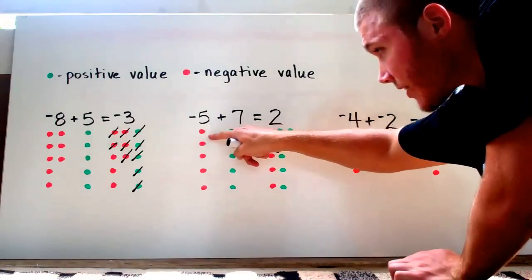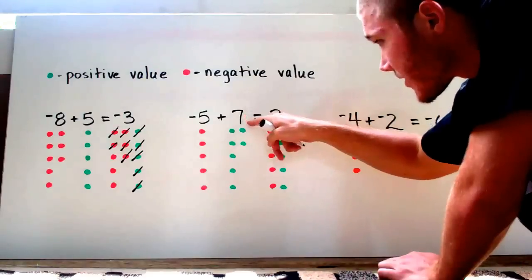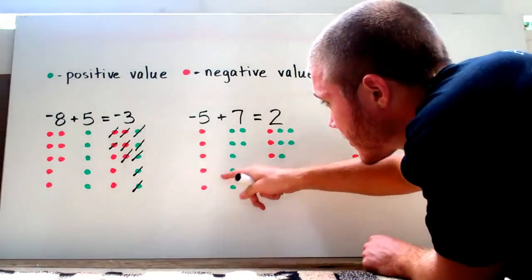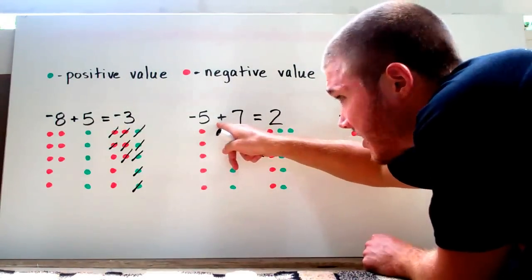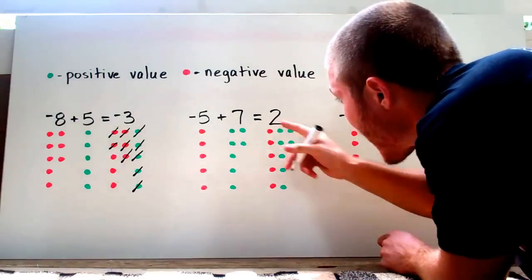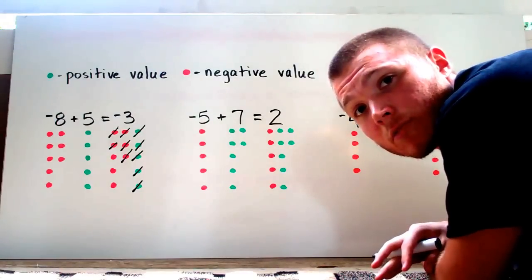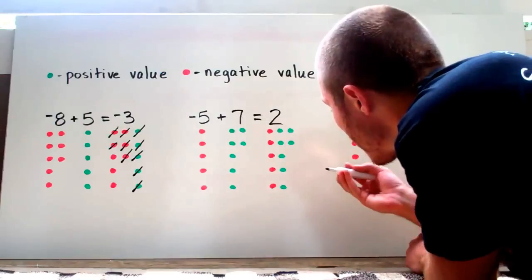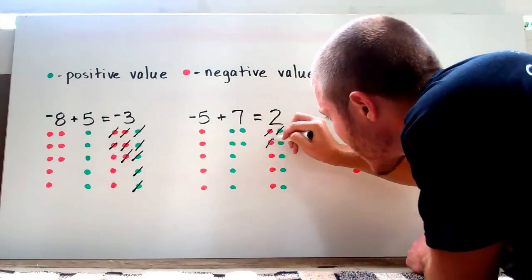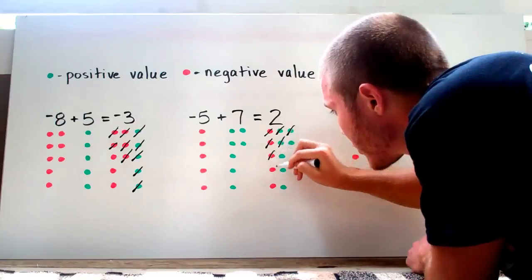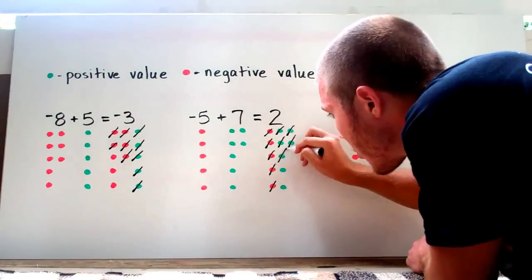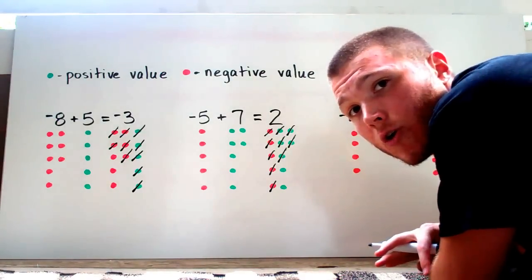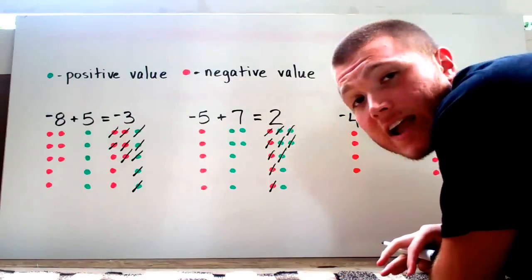Negative five — I've got five negative units. Positive seven — I've got seven positive units. Five negatives, seven positives. I combine them because I'm adding. When you add things together, you're combining them. I have to cross out every positive unit for every negative unit. I'm going to cancel out one red, one green — one red, one green — one red, one green — one red, one green — one red, one green. Can't cancel out any more. I'm left with two green units, or positive two, which is why my answer is positive two.